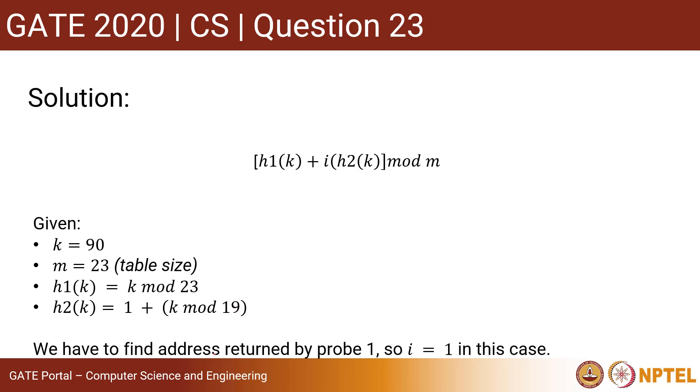Now we have to find the address returned by probe 1. So i here in this expression is the index of the probe sequence. We have to find the address returned by probe 1, so i = 1 in this case. This information is given in the question.